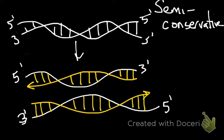And so what semi-conservative replication basically says is that each of the parent strands that are shown in white here are going to serve as a template to make a new DNA sequence.